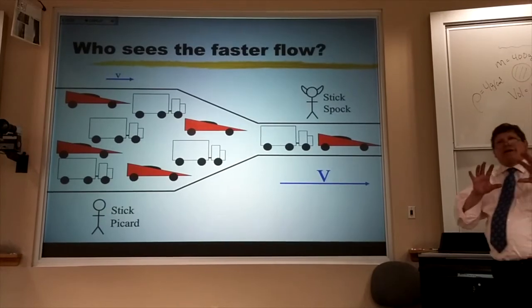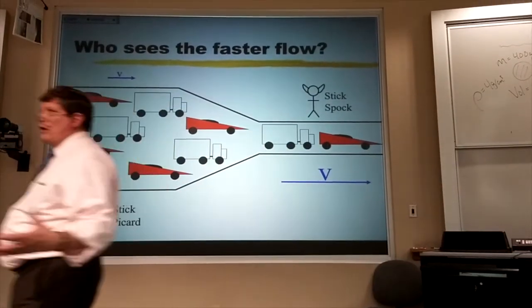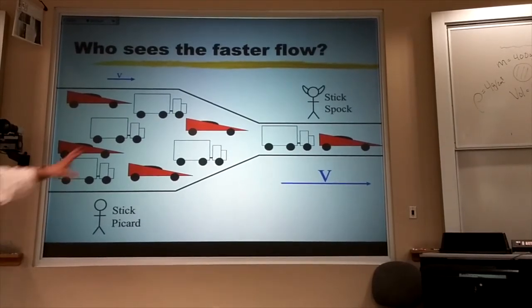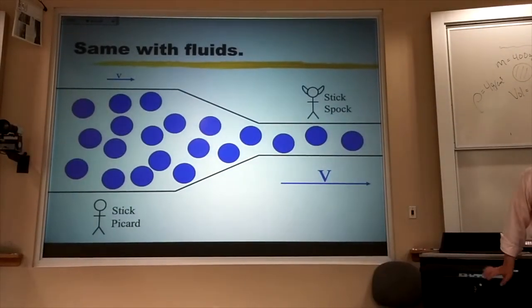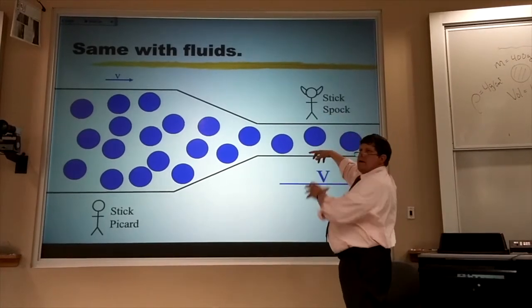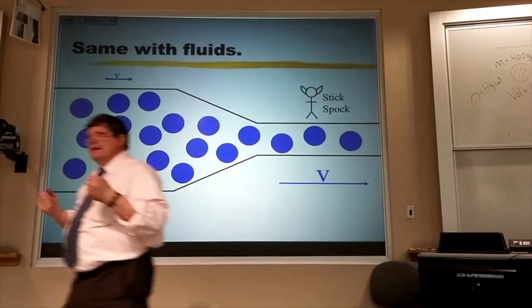Now, we're not interested in highway dynamics or the motion of cars. We're talking about fluids. So let's replace this highway with a pipe. And that pipe goes from a fat pipe to a skinny pipe. And we're going to look at a liquid going through that pipe, and it's going to be a chunky liquid.